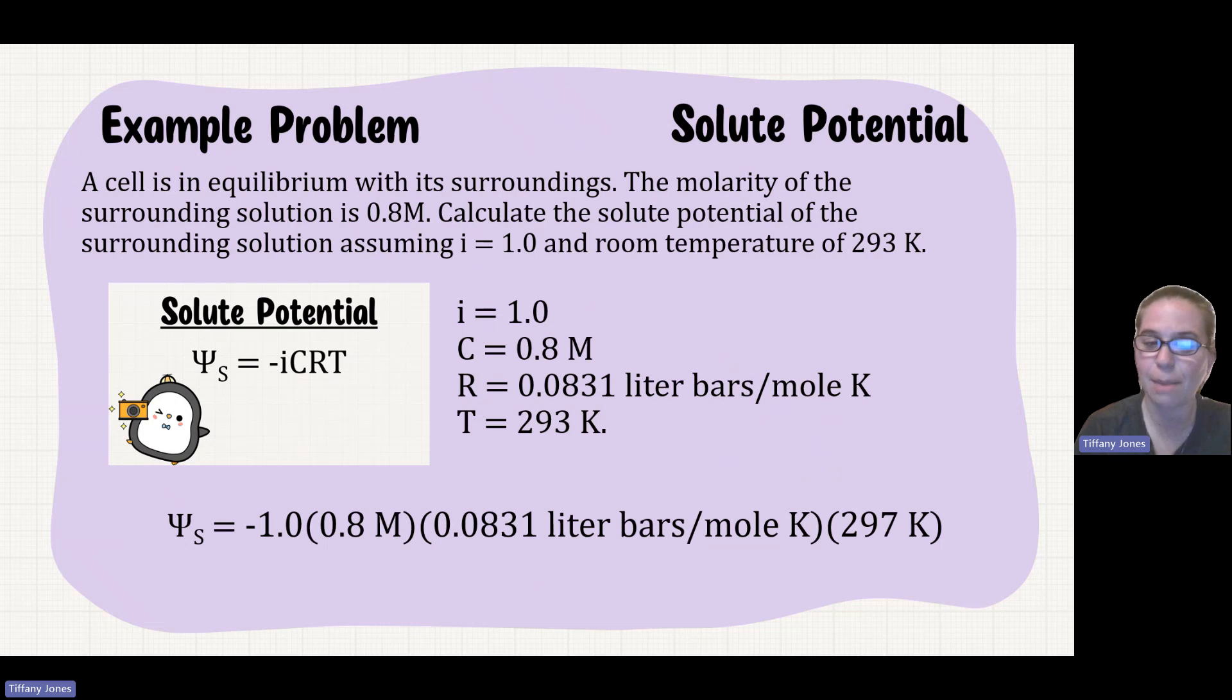Negative 1 times 0.8 molar times my pressure constant times my temperature of 297, and that gives us negative 19.74 bars.